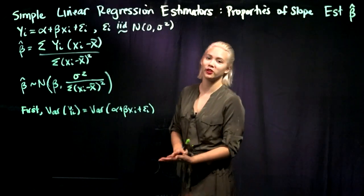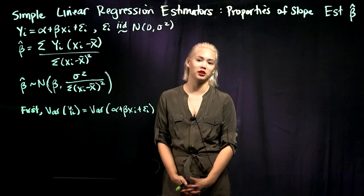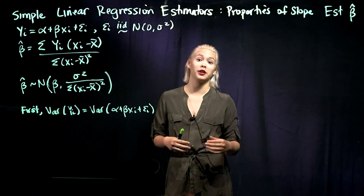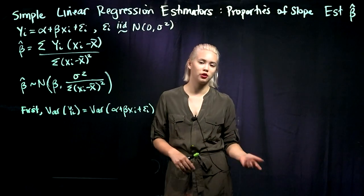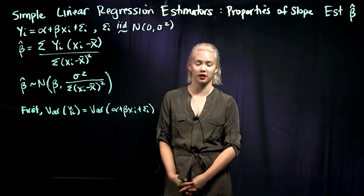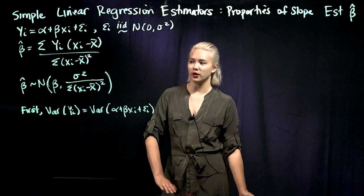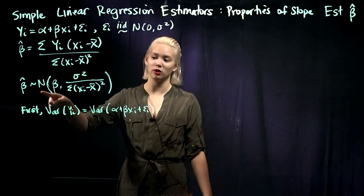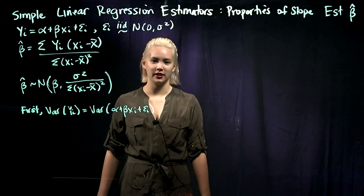We've been talking about simple linear regression and looking at the estimators for the intercept and slope. Now in this video we're going to look a little bit more at the slope. Previously we saw that the expectation of the slope estimator beta hat is just beta, and now we're going to talk about why beta hat is normally distributed and why it has this variance here.